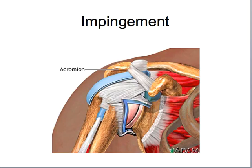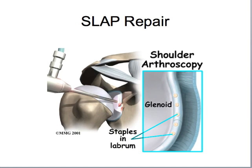The rehab for a SLAP repair lesion is dictated extremely closely by the surgeon because they know what needs to be done. Range of motion will be limited until the surgeon specifies what can be returned and how fast. There are lots of different protocols out there — usually surgeons have their own — and the patient comes back to rehab with a specific protocol stating which exercises. So a general protocol isn't provided because they vary so much.